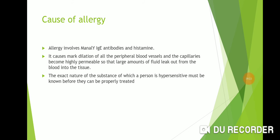What is the cause of allergy? Allergy mainly involves IgE antibodies and histamine. IgE antibodies as well as histamine present in the skin cause dilation of all peripheral blood vessels. The capillaries become highly permeable so that large amounts of fluid leak out from the blood into the tissue.